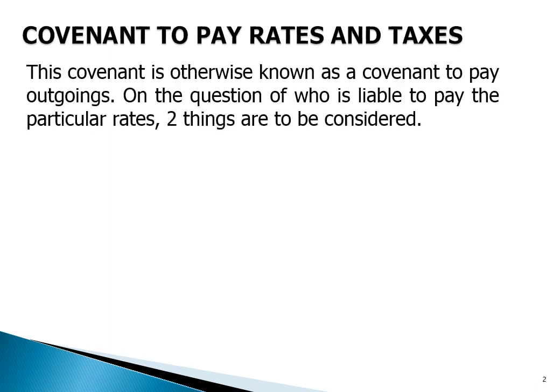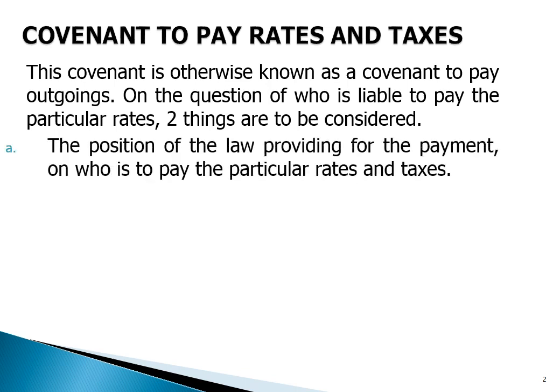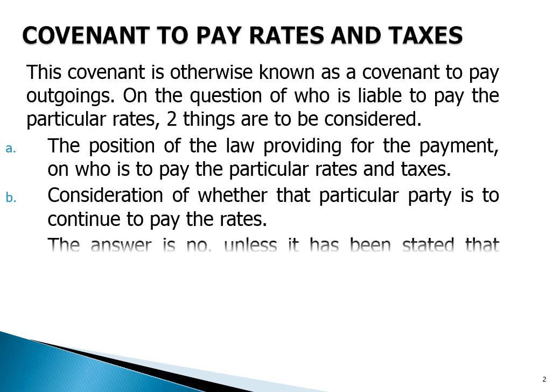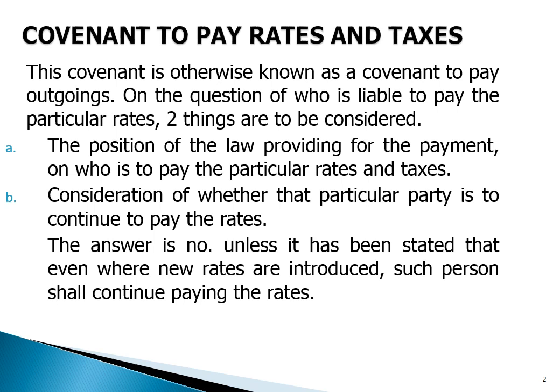Covenant to pay rates and taxes — this covenant is otherwise known as a covenant to pay outgoings. On the question of who is liable to pay particular rates, two things are to be considered: the position of the law providing for the payment, and who is to pay that particular rate and taxes. The answer is that a party is not required to continue to pay rates unless it has been stated that even where new rates are introduced, such person shall continue paying.